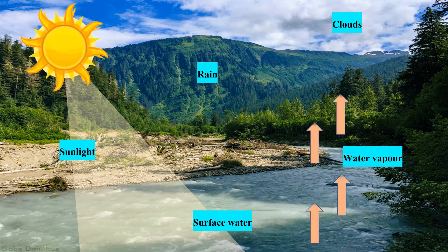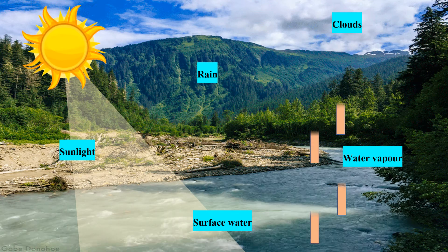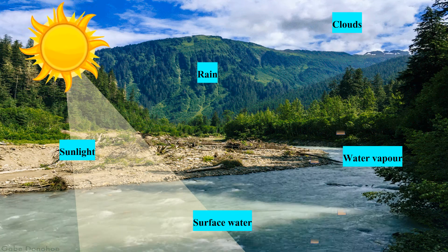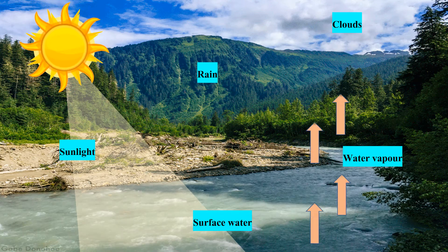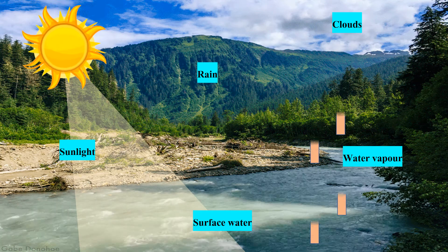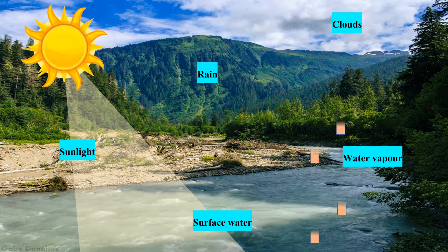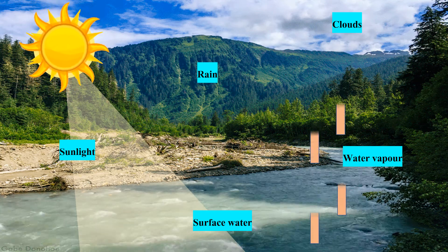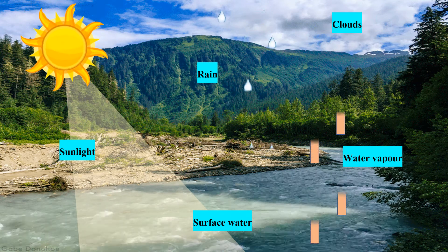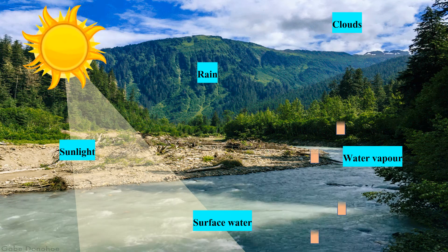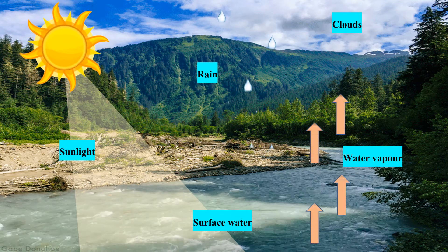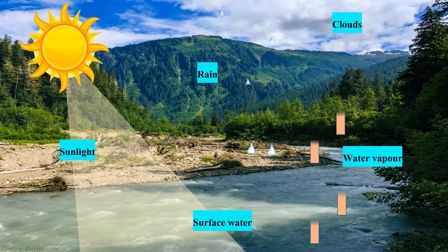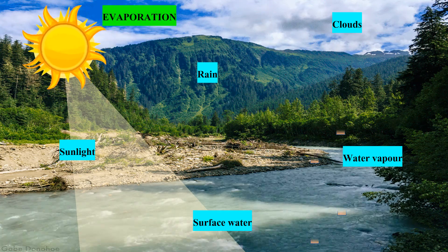The cooler temperature allows the vapour to condense back in the form of water droplets. These water droplets come together to form clouds, and when these clouds saturate, the droplets fall on the ground in the form of rain. This is the best example of evaporation in nature.